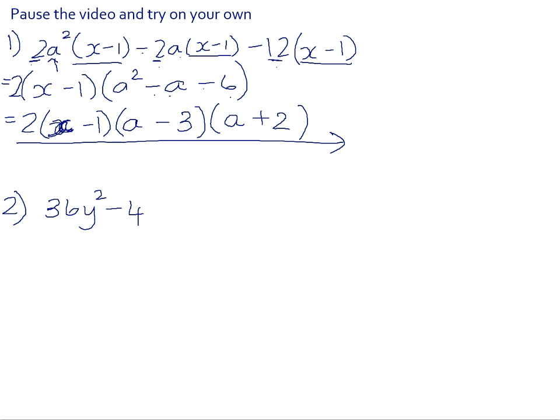In number 2, always look for a common factor first. This one is a tricky one because it looks like it's a difference of 2 squares. 36y squared is a perfect square and 4 is a perfect square. But in actual fact, 4 is a common factor here.